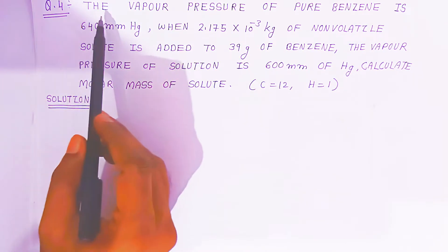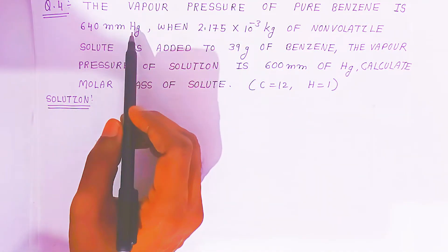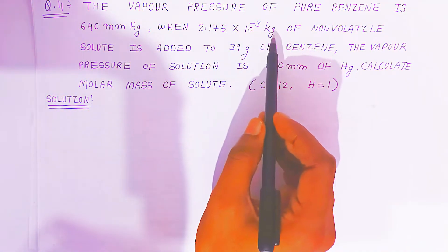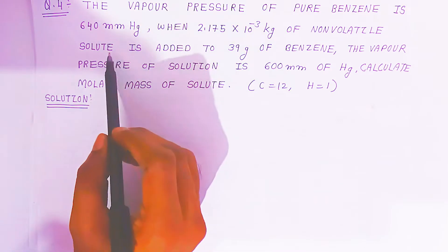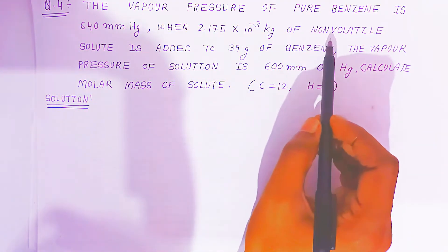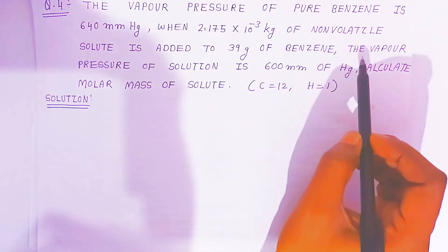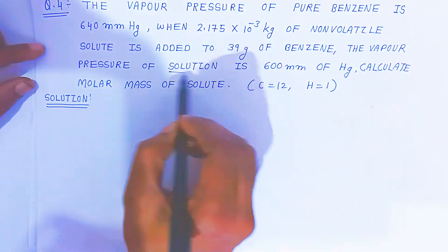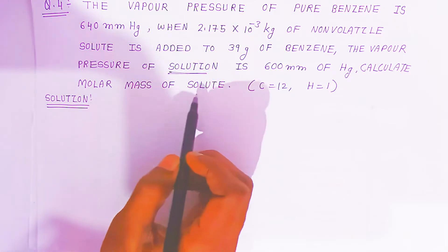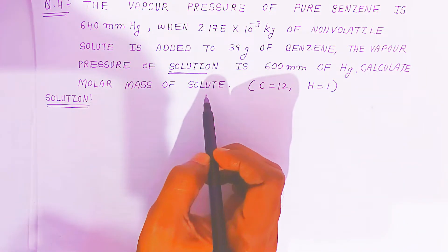In question number 4, the vapor pressure of pure solvent — that is pure benzene — is 640 mm mercury. When 2.175 × 10⁻³ kg of non-volatile solute is added to 39 grams of benzene. They have not mentioned what solute is, only that it is a non-volatile solute. The vapor pressure of the solution is also given: 600 mm mercury. Calculate the molar mass of the solute.